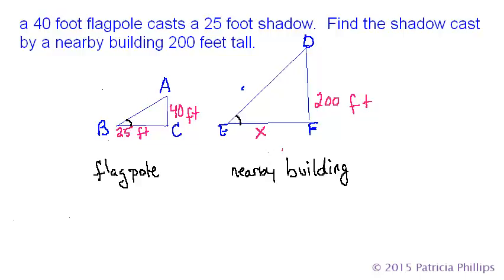So in our question it says a 40 foot flagpole casts a 25 foot shadow. Find the shadow cast by a nearby building 200 feet tall.